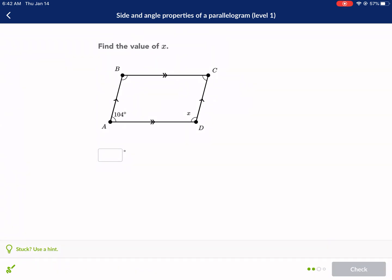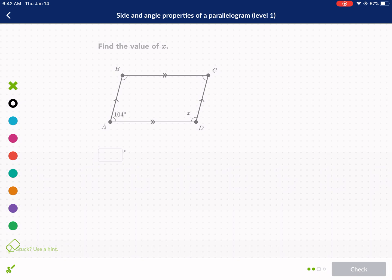Next one. Find the value of X. Now, the other property of parallelograms, and the reason why I know it's a parallelogram, you guessed it, opposite sides are parallel. The other property of parallelograms are consecutive angles. That means one after the other, next to each other, sharing a side. So they both share this side here.